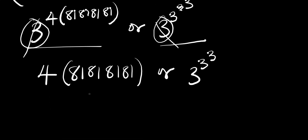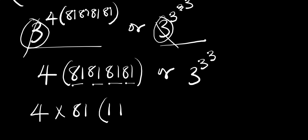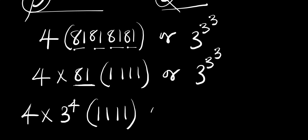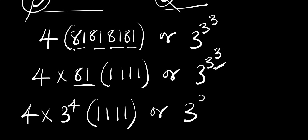Let's proceed. This is 81, 81, 81, 81 — that is 81 into 4 places. We can factor that out, so we have 4 times 81 to the power of 4. That is, we rewrite 81 in index form as 3 to the power of 4. Or we still have 3 to the power of 3, and these two exponents give us 3 to the power of 27.